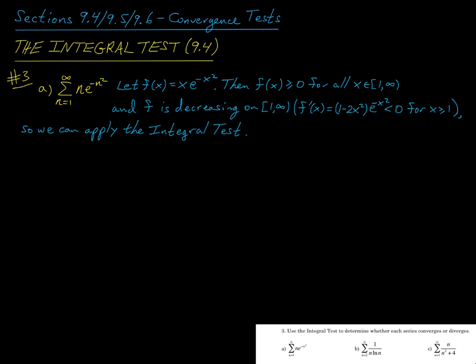Here, f is non-negative. The exponential term is always positive for any x, and since we're on the interval from 1 to infinity, the x in front is also positive, so this product is positive. And f is decreasing — if you take the derivative of f and simplify, you get f prime of x equals the quantity 1 minus 2x squared times e to the negative x squared, which is negative on the interval from 1 to infinity. So f is both non-negative and decreasing, and we can apply the integral test.